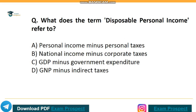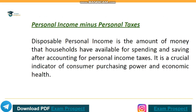What does the term disposable personal income refer to? Correct answer: option A, personal income minus personal taxes. Disposable personal income is the amount of money that households have available for spending and saving after accounting for personal income taxes. It is a crucial indicator of consumer purchasing power and economic health.